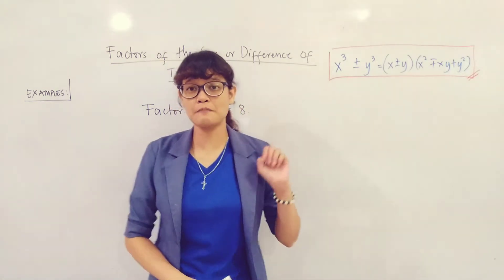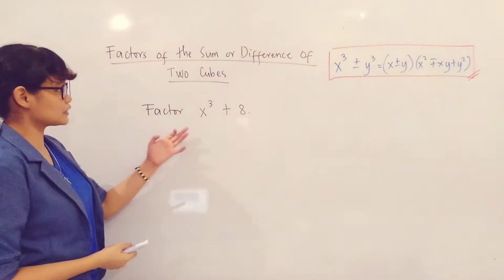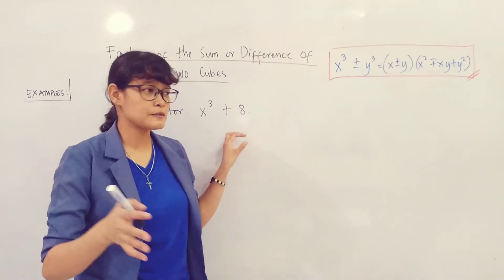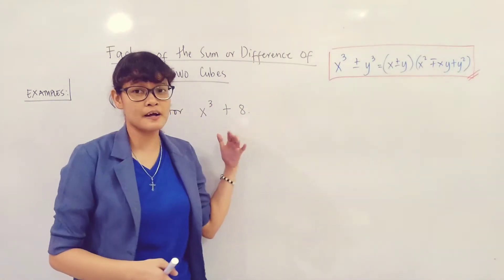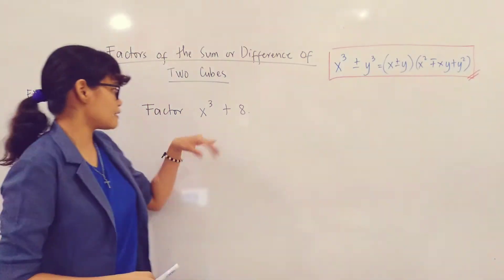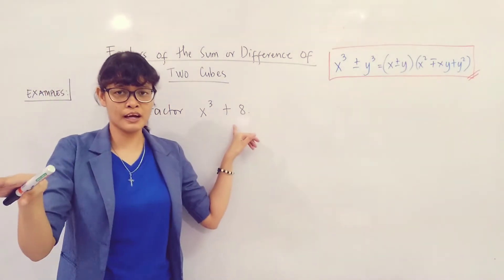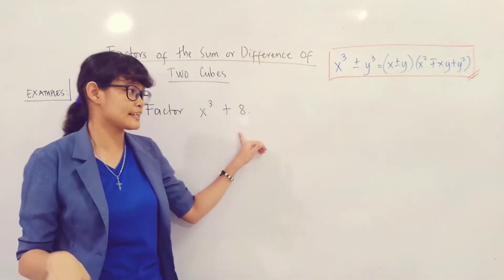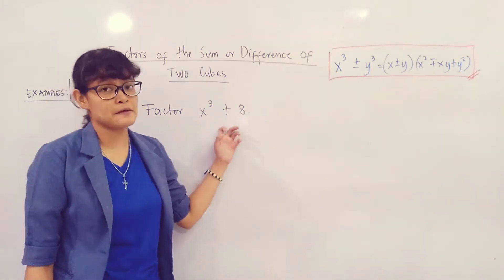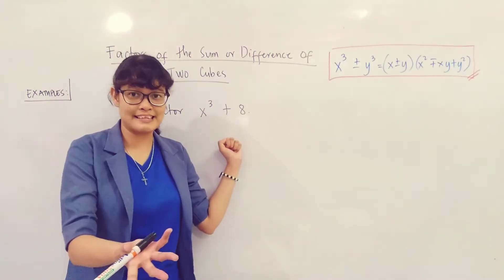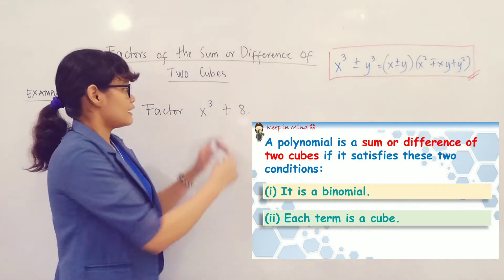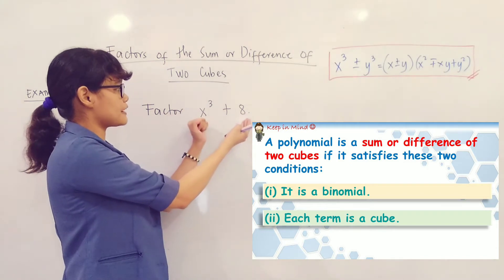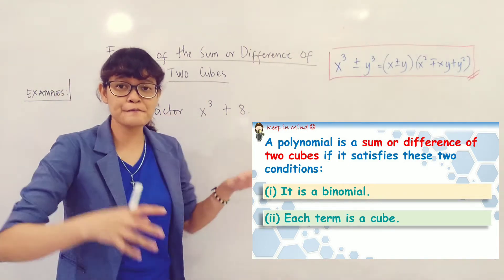Let's work on example number one. Factor x cubed plus 8. This is still under polynomials. First, check if there is a common monomial factor. You have x cubed and 8 — they are relatively prime, so there is no common monomial factor. The sum or difference of two cubes is a binomial, and both the first and last terms must be perfect cubes.